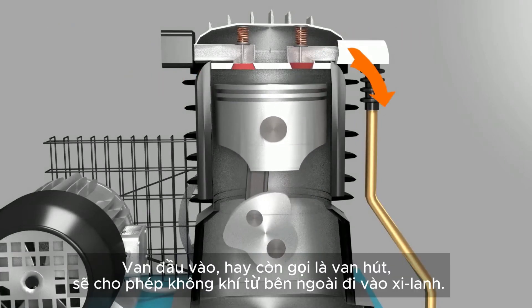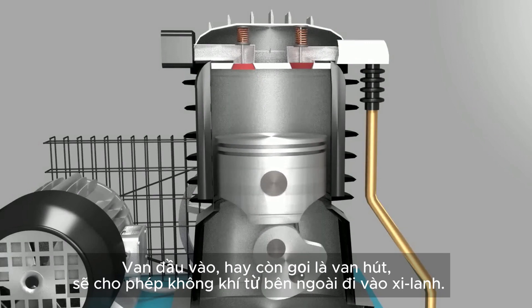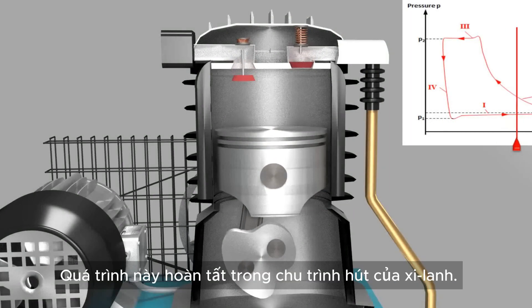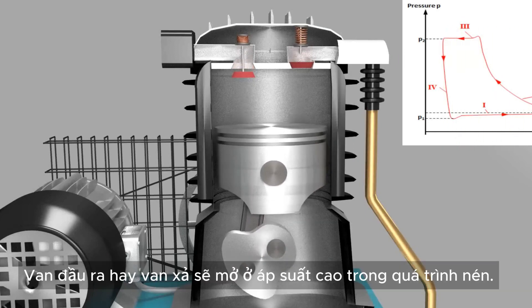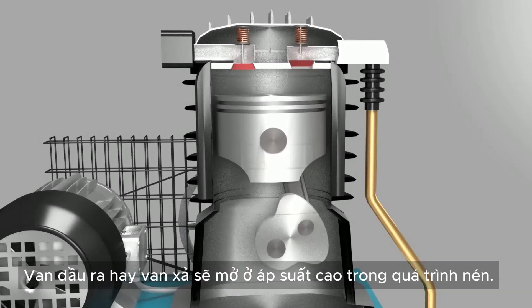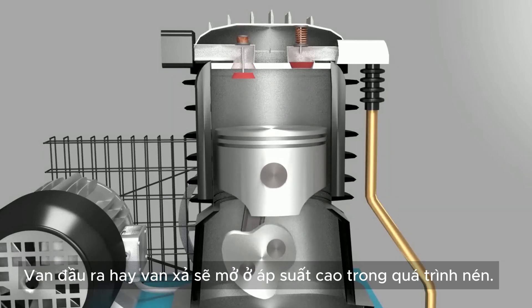The inlet valve, also called suction valve, allows atmospheric air to enter the cylinder. This is done during a suction stroke of the cylinder. The outlet, or discharge valve, opens at high pressure during the compression strike.